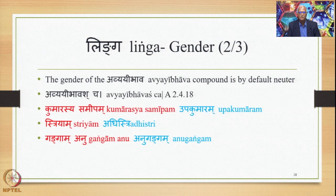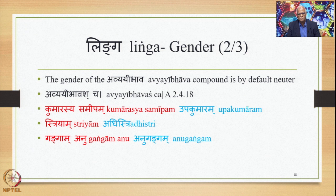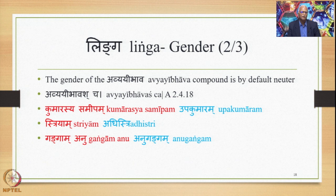The gender of the Avyaibhava compound is by default neuter. This is stated by the Sutra Avyaibhavascha, 2.4.18. So if we have the Laukika Vigraha Kumarasya Samipam, the Samasa form would be Upakumara in neuter gender, giving Upakumaram. Similarly, if we have the Laukika Vigraha Stryam, the Samasa output would be Adhistri in neuter. If we have the Laukika Vigraha Gangamano, the Samasa output would be Anuganga, also in neuter, giving Anugangam.